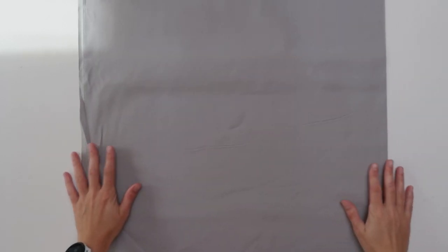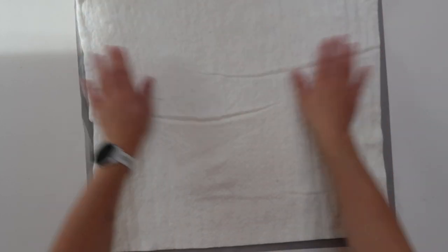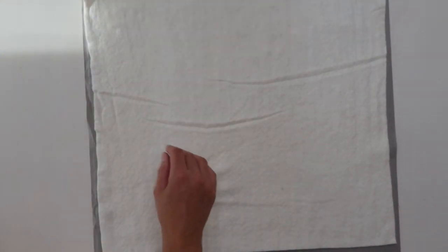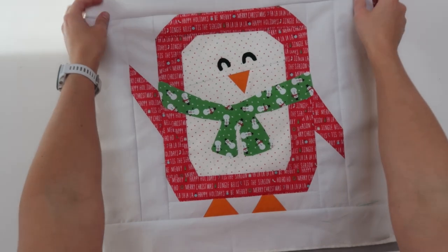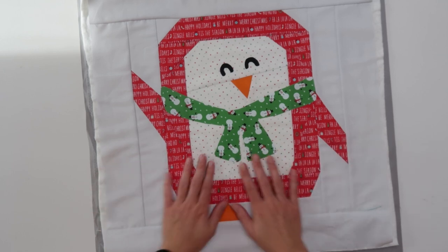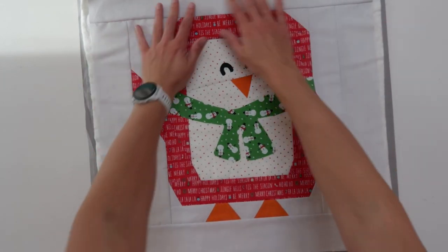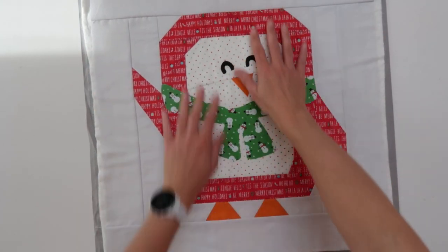For the quilt sandwich, I take a piece of fabric for the backing and then a piece of batting. And of course, one of the penguins. This makes a lovely quilt sandwich. You can baste this, of course, with spray basting or with pins or whatever basting method you like.